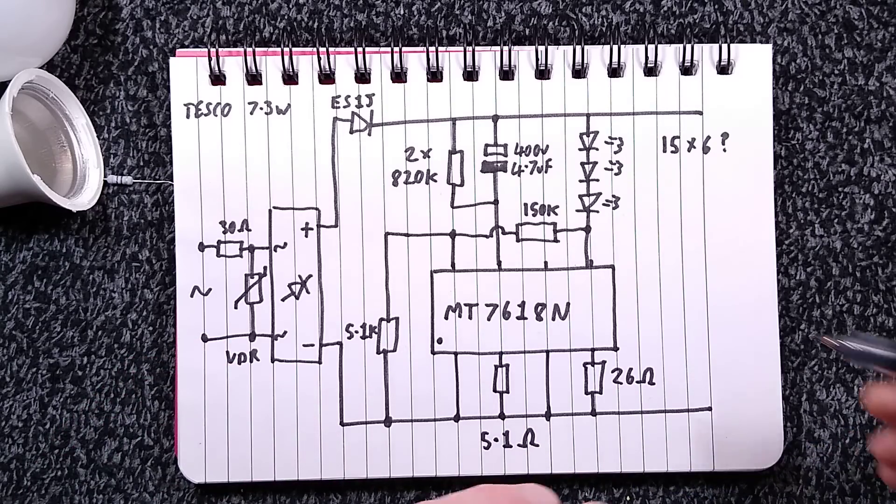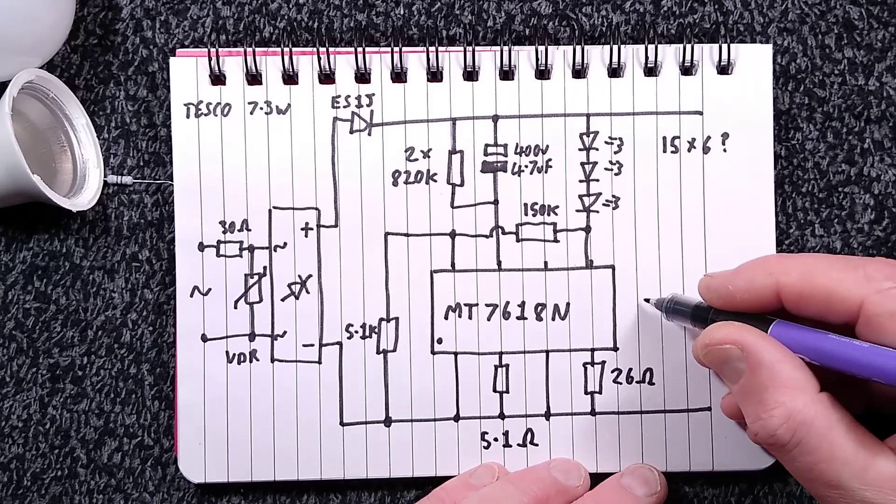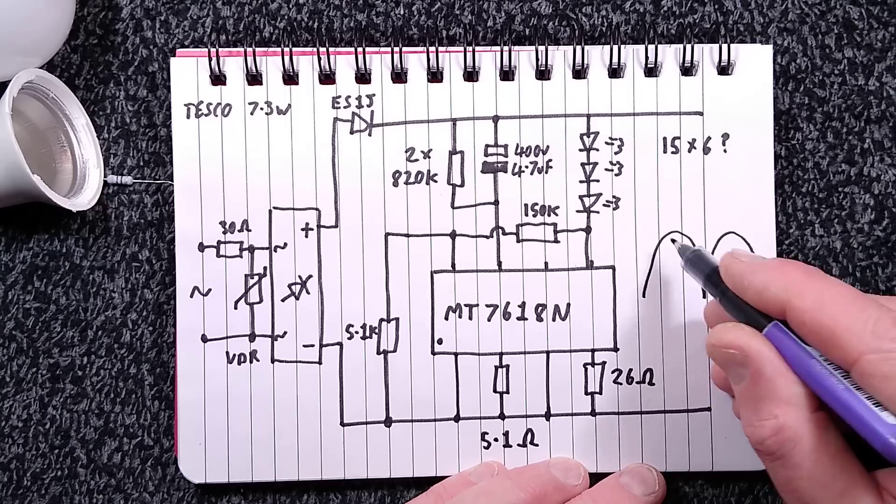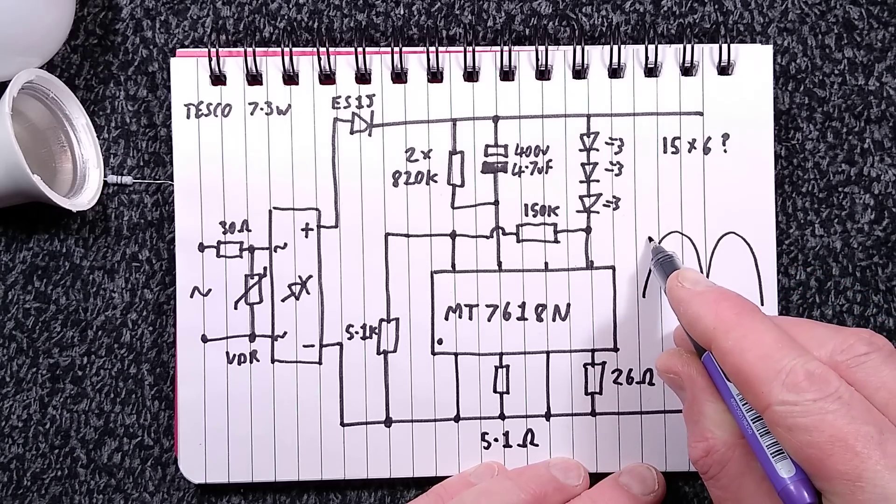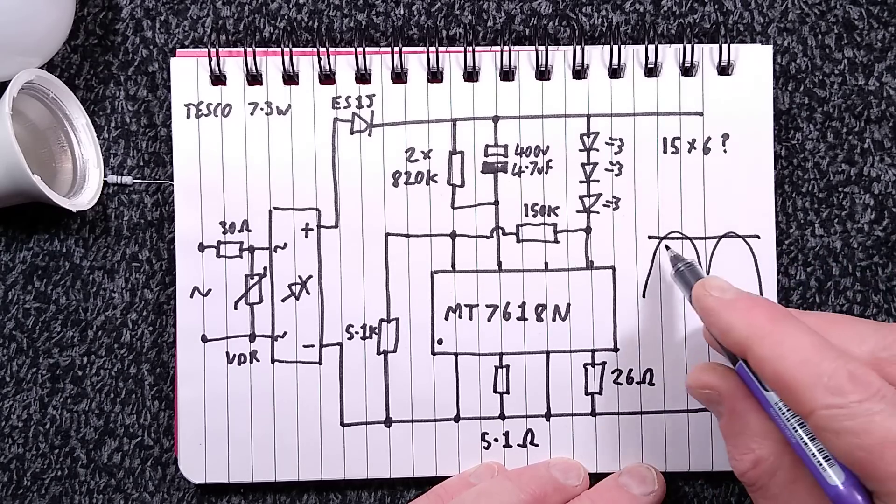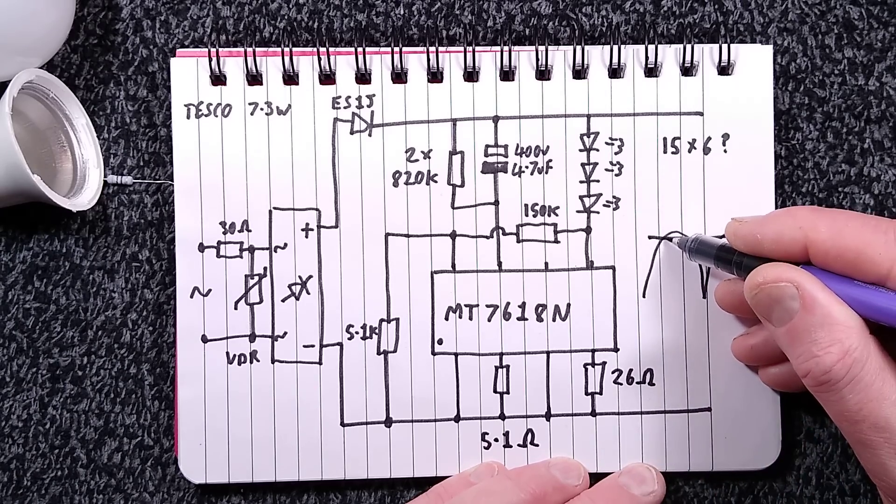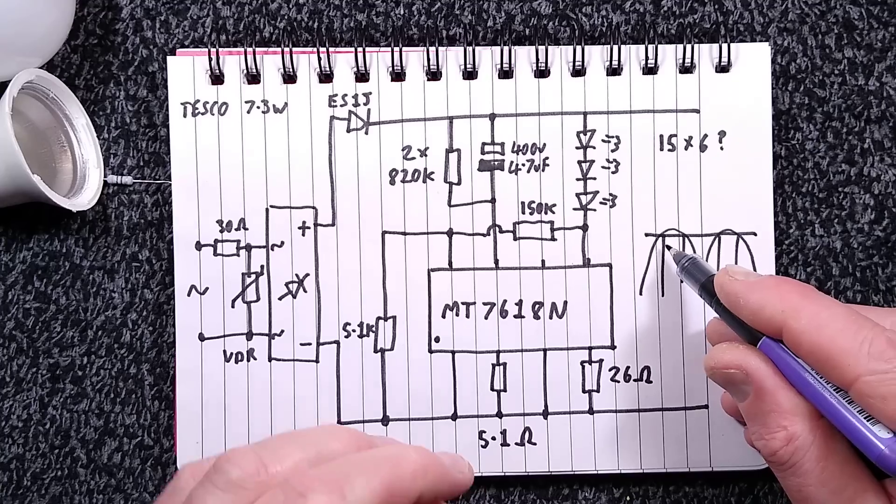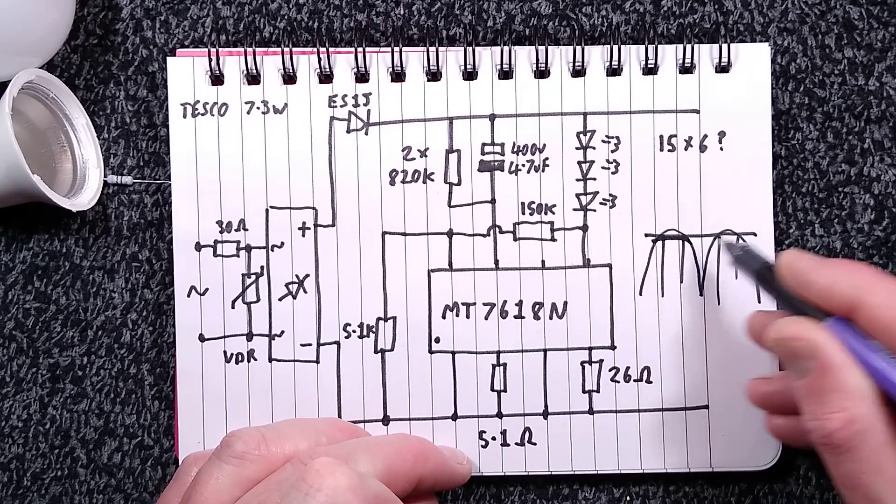And what that means is that whereas in a normal circuit when you've got the rectified mains looking like this, normally because the capacitor is charged almost to the full level of the peak mains voltage, it means all the current tends to be drawn at the top.